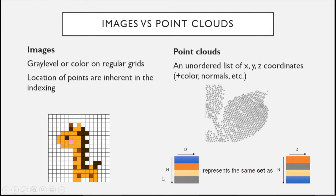You have this set of 3D points. Each point can have only XYZ coordinates, or it can have some other attributes like normals or color, etc. The problem with this set is that it is unordered. So if you change the order, if you shuffle the points, you're going to get the same set, the same point cloud. You don't have any inherent indexing structure giving an idea about the local structure or geometric structure of the points.